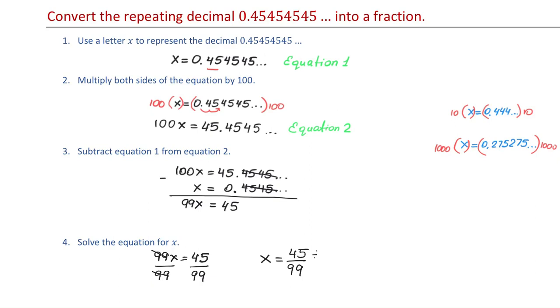So if we divide the top by 9 that will give us 5. And if we divide the bottom by 9 that will give us 11. So we just converted the repeating decimal 0.45 repeating into a fraction and the fraction is 5 over 11.